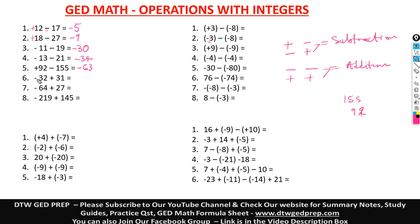Here we have a negative and a positive, so we are going to subtract. We subtract 31 from 32 and that gives us 1. And 1 would take a negative sign.